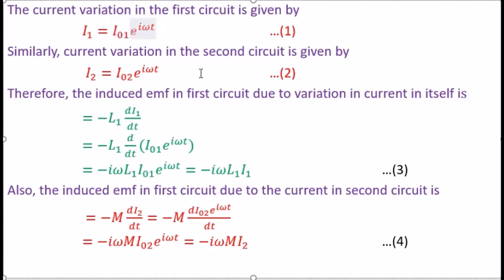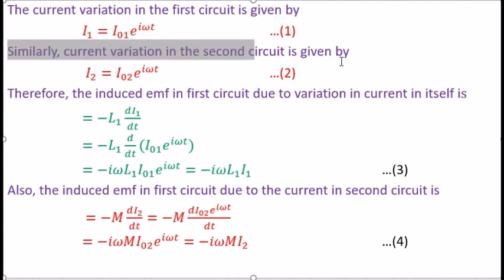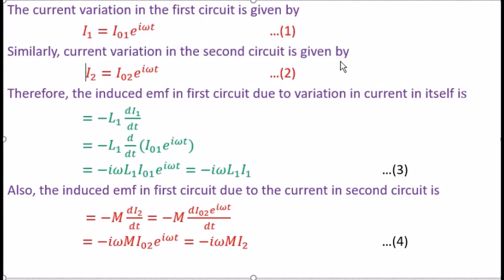The current I1 can be expressed as I01 times e raised to the power iota omega t, where I01 is the amplitude or peak value of the current in the first circuit. Similarly, for the second circuit, the current I2 equals I02 times e raised to iota omega t — call this equation 2 — where I02 is the peak value of current in the second circuit.